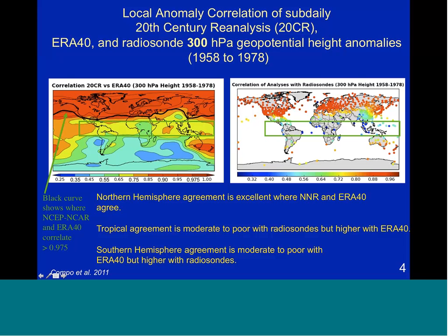If we look in the tropics, it's somewhat surprising: the correlations with the radiosondes are significantly lower than the correlations with the reanalysis, suggesting that the combination of temperature and wind data in the reanalysis is creating a better field for geopotential height than just using temperature and integrating that up, which is how the radiosonde geopotential height would be derived. It may also indicate other problems in the tropics. In the southern hemisphere, the situation is reversed — correlations with ERA-40 are much lower than with the in-situ radiosonde data.